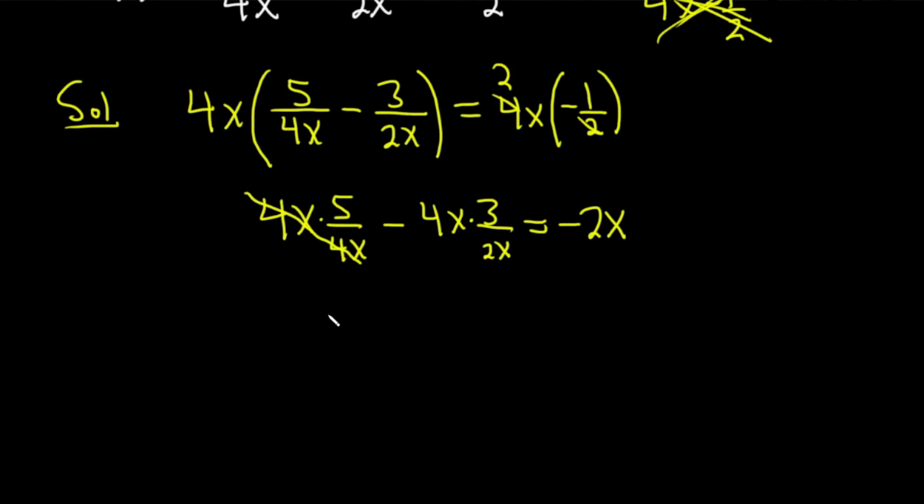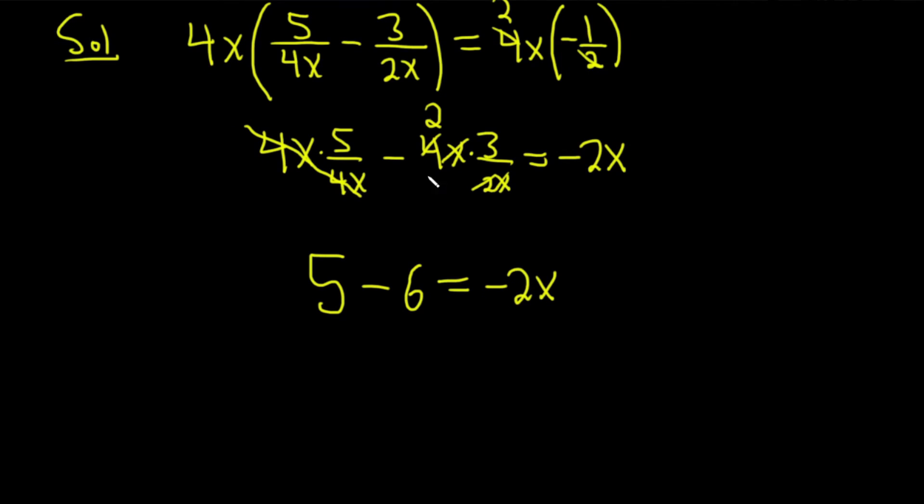Now we can clean up: these 4x's cancel, so we have 5 minus—these x's cancel—2 goes into 4 twice, and 2 times 3 is 6, so we get 5 - 6 = -2x. 5 - 6 is -1, so -1 = -2x. To finish, we divide by -2, and we get x = 1/2 as the answer.